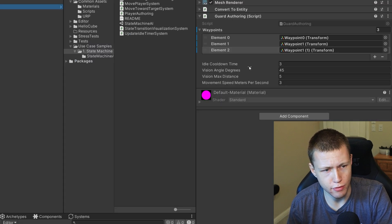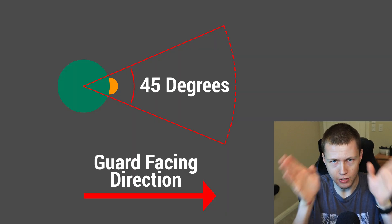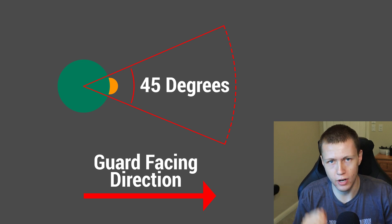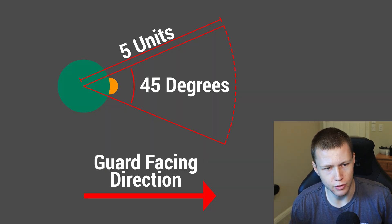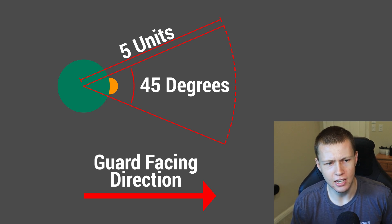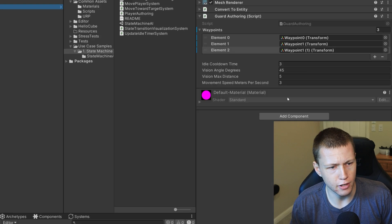We can also configure how long the guard is going to be in the idle state — right now it's set to three seconds. The vision angle in degrees is the vision cone: a 45-degree angle directly forward. It also has a maximum distance of five units. If the player is closer than five units and within that 45-degree angle, the guard counts the player as seen. If the player is outside that angle or past that distance, the player is not seen.